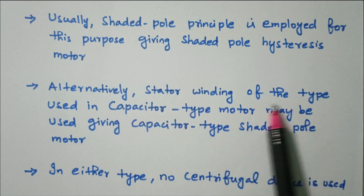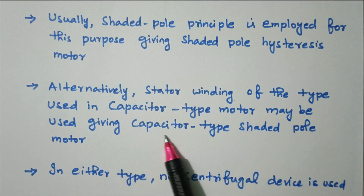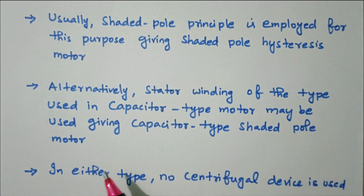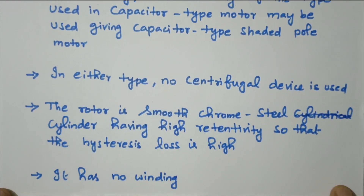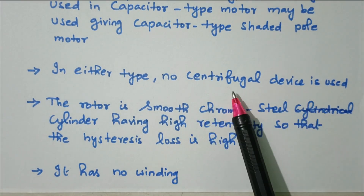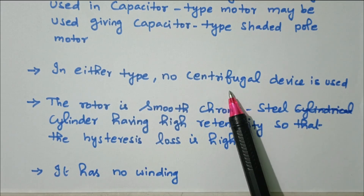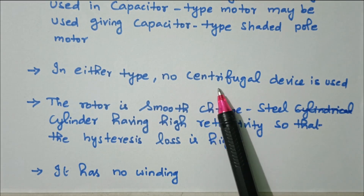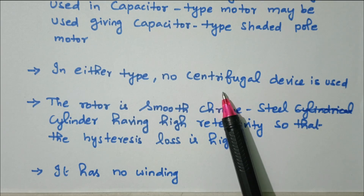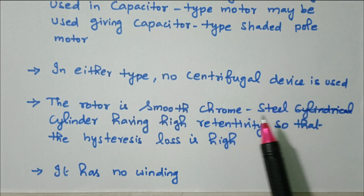Alternatively, the stator winding of the type used in a capacitor-type motor may be used, giving a capacitor-type motor. In addition, a capacitor is also available. In either type, no centrifugal switch is used. Normally a centrifugal switch is used to disconnect the starting winding, but here both windings are connected during starting as well as running, so a centrifugal switch is not used.